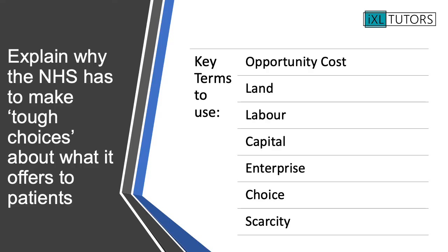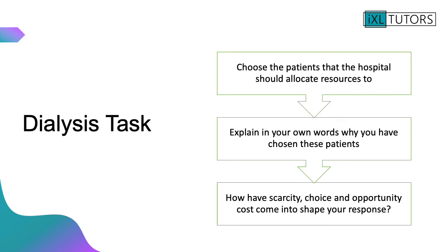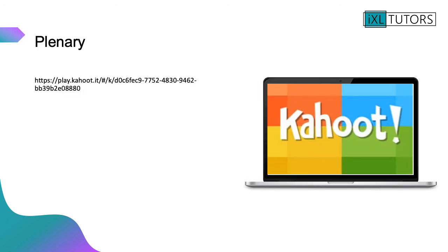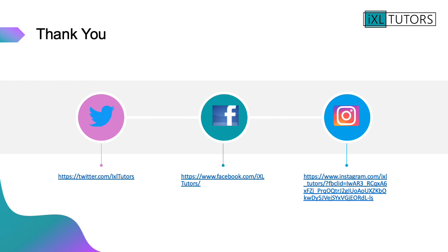The NHS has to make tough choices about what it offers to patients. Using all the key terms we've looked at today — opportunity cost, land, labour, capital, enterprise, choice, and scarcity — explain why the NHS has to make tough decisions about what it offers to patients. It just needs to be a couple of sentences. That's the end of today's introduction to economics. We've looked at the economic problem and why economics is a social science. Thank you very much for watching.